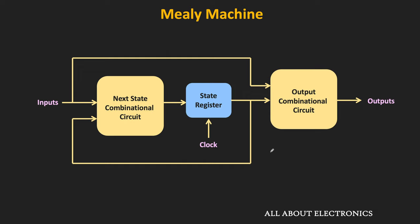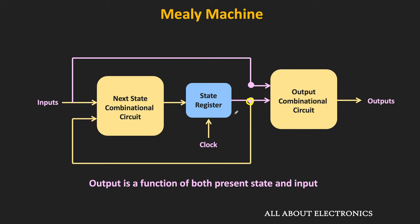In the Mealy machine the output is a function of the present inputs as well as the present state of the internal memory elements. This combinational block generates the input for the memory element, and according to those inputs at the next clock edge the state of the memory element will change. This combinational logic will decide the next state of the memory element. The input to this combinational block is the external inputs as well as the present state of the memory element, and the output combinational circuit generates the output of the overall circuit. In the Mealy type finite state machine, the present external inputs will also be the inputs to this output combinational block, so the overall output is a function of the present state of the memory element as well as the present inputs to the circuit.